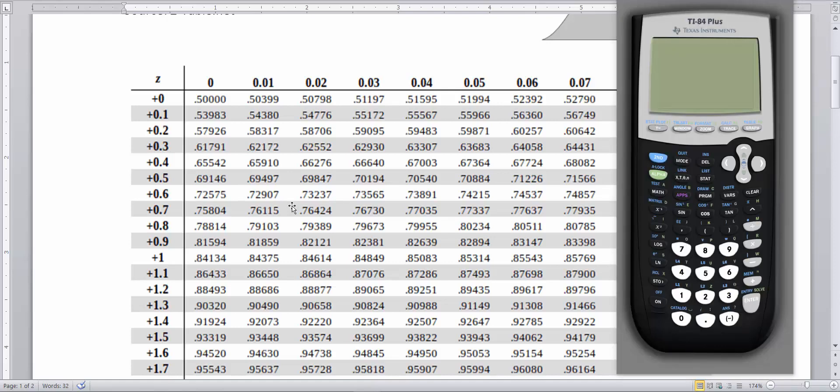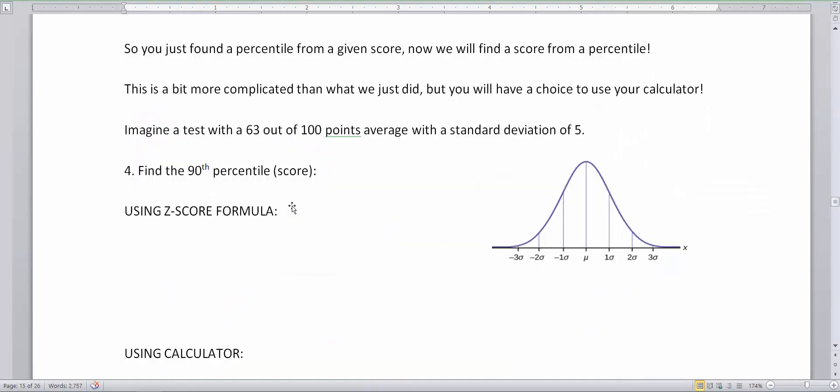Okay so there's going to be a lot of homework problems where they're going to give you a percentile score. Now let's kind of center ourselves on what this problem is asking about. Imagine a test with 63 out of 100 points being the average. Okay so my average is 63. Now the question is, we're going to find the 90th percentile score which is x.